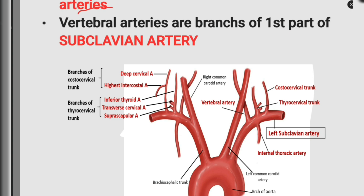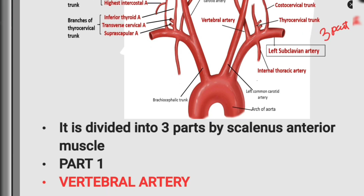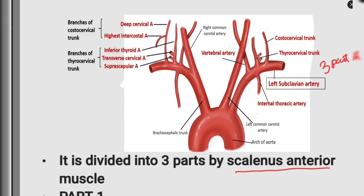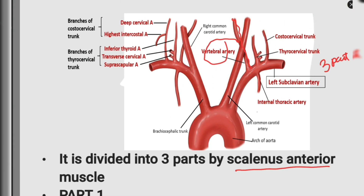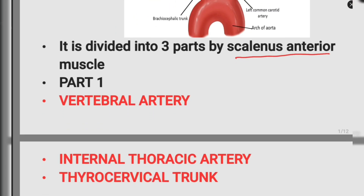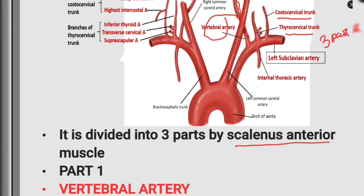This is the arch of aorta. The branch of the arch of aorta is the subclavian artery. The subclavian artery is divided into three parts by the scalenus anterior muscle. From part one, we get the vertebral artery, the internal thoracic artery, and the thyrocervical trunk.